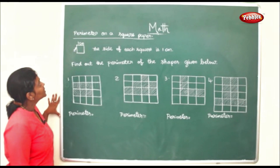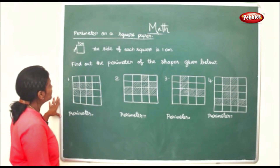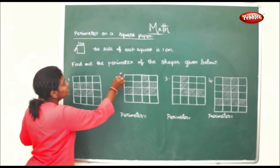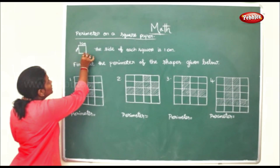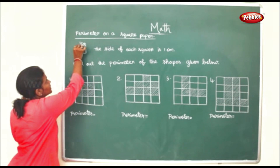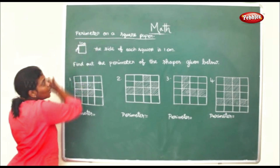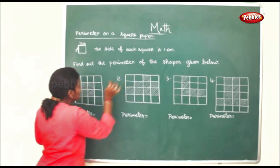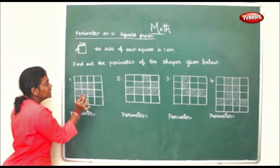Now we shall see how to find the perimeter on a square paper. The side of each square is 1 centimeter. To find the perimeter of the shapes given below, we will just count the sides alone — each side of each small square counts as 1 centimeter.